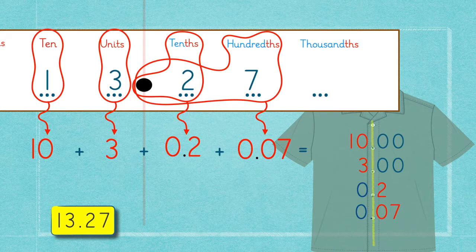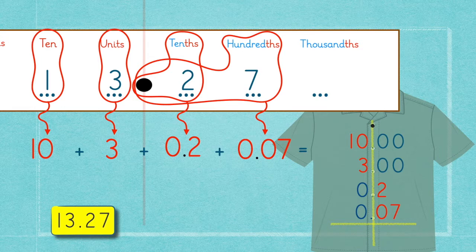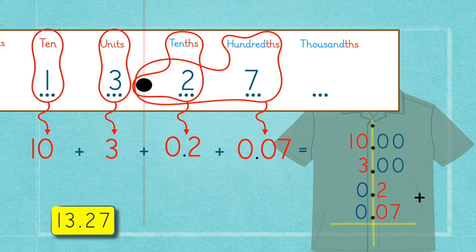Please note that when adding up decimal numbers, the numbers should be placed vertically so that their decimal points are perfectly aligned, just like buttons on a shirt.